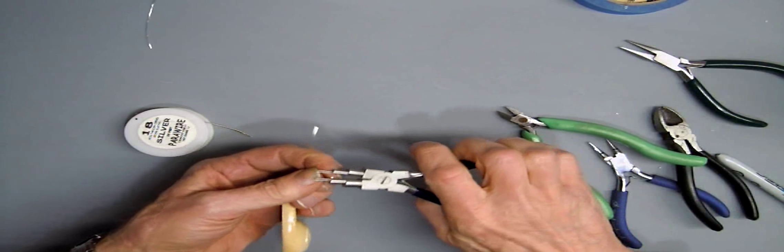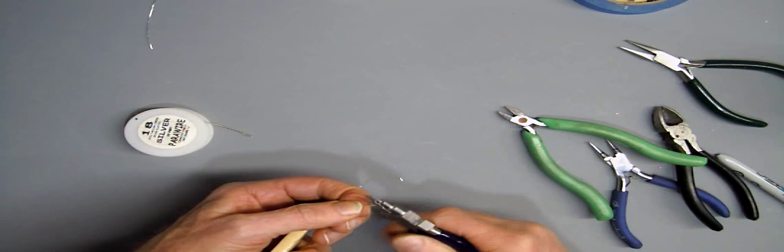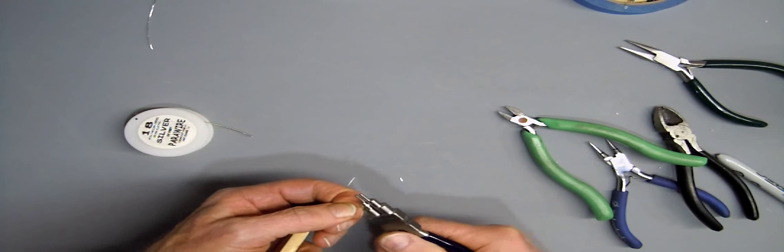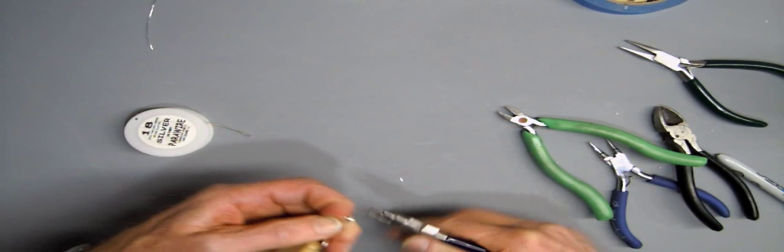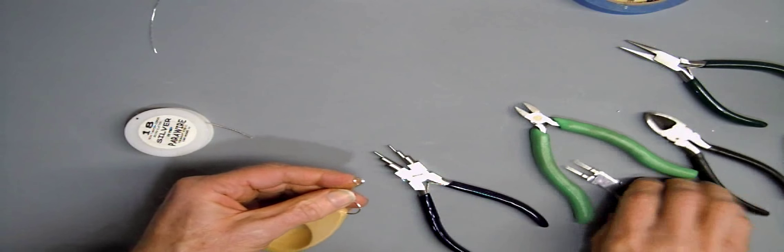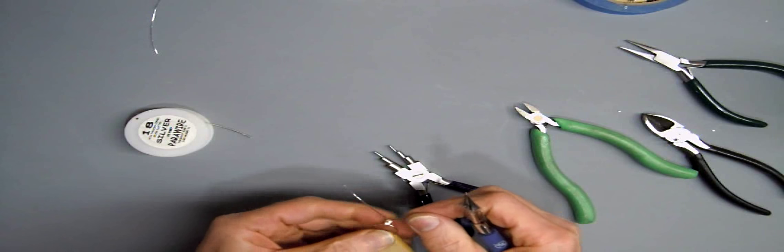Now we're going to use a bale forming pair of pliers to form a loop at one of the ends. This has stepped diameters as opposed to the tapered ones on round nose pliers. You just pick one diameter and keep going in until you have a circle.